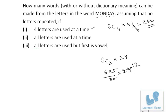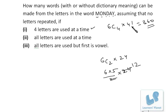When all six letters of MONDAY are used at a time, we have six places and six letters, so the answer is simply 6! as straightforward as that.